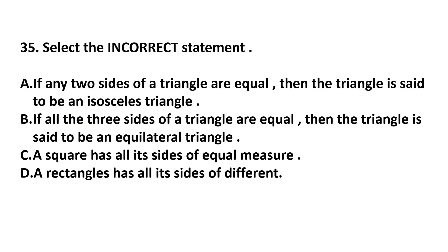Question number 35. Select the incorrect statement. Option A. If any two sides of a triangle are equal, then the triangle is said to be an isosceles triangle. Yes, this statement is correct. And we have to find out the incorrect statement. Option B. If all the three sides of a triangle are equal, then the triangle is said to be an equilateral triangle. Yes, this statement is also correct. Option C. A square has all its sides of equal measure. Yes, this is correct.